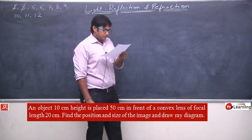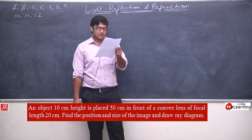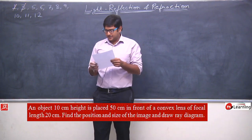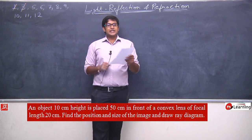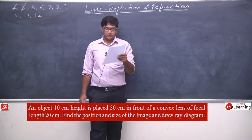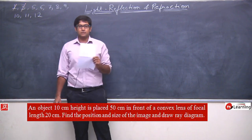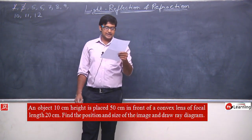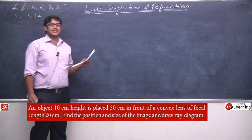Now we will discuss question number 5. It says: an object 10 cm high is placed 50 cm in front of a convex lens of focal length 20 cm. Find the position and size of the image and draw a ray diagram. We need to find position and size of the image.